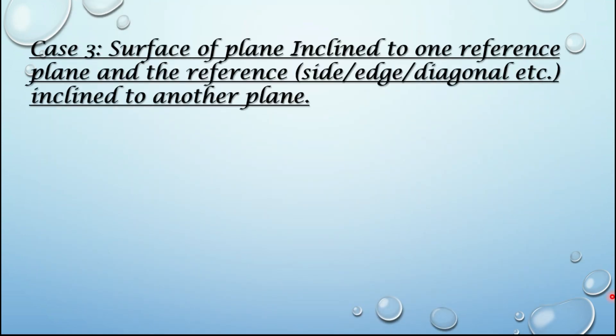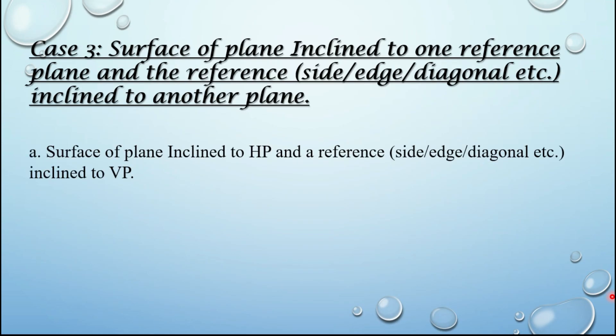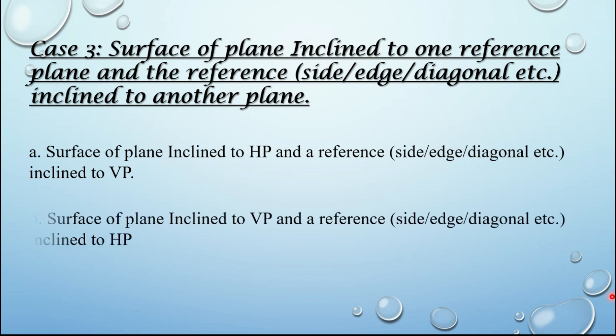Now case number three has two sub-cases. Either the surface of the plane is inclined to HP and a reference — that is a side edge, diagonal, etc. — is inclined to VP, or the surface of the plane is inclined to VP and a reference is inclined to HP.